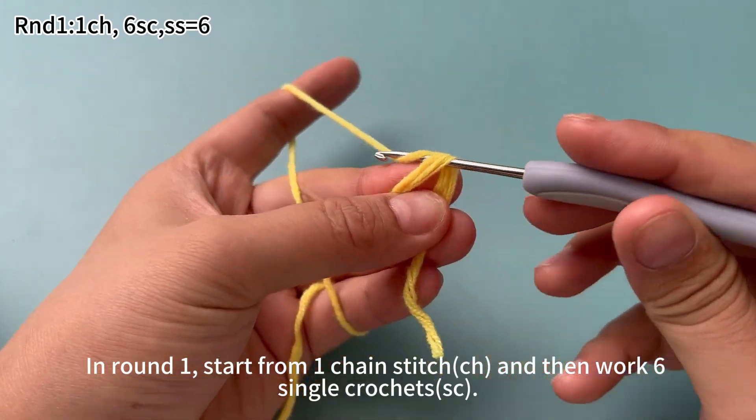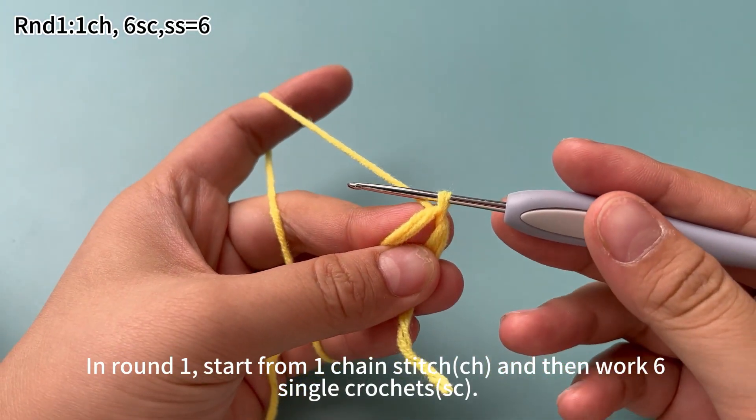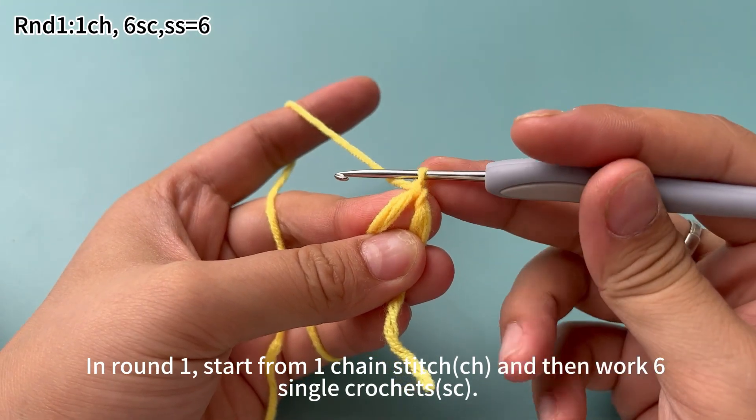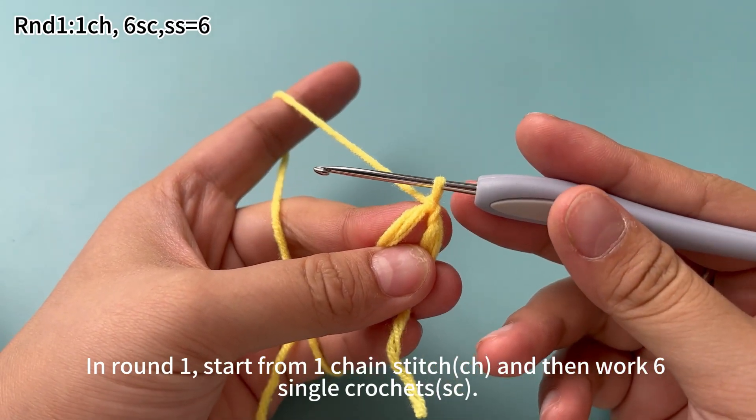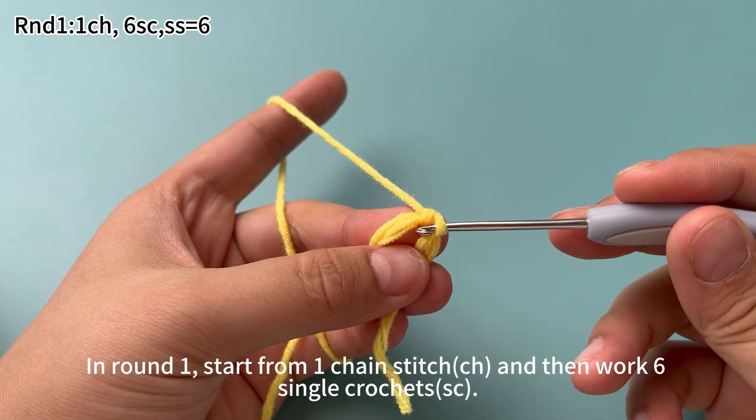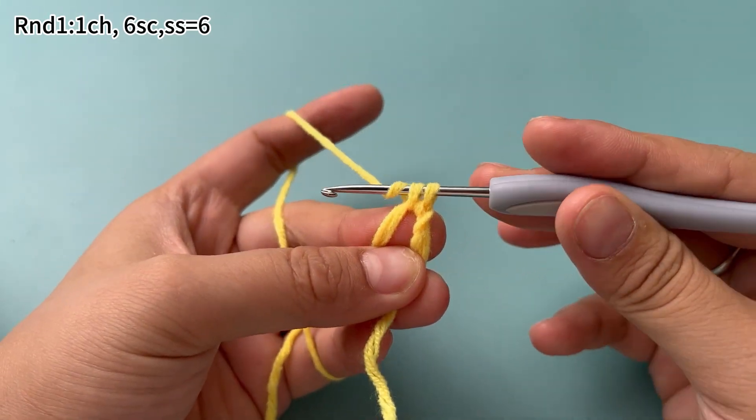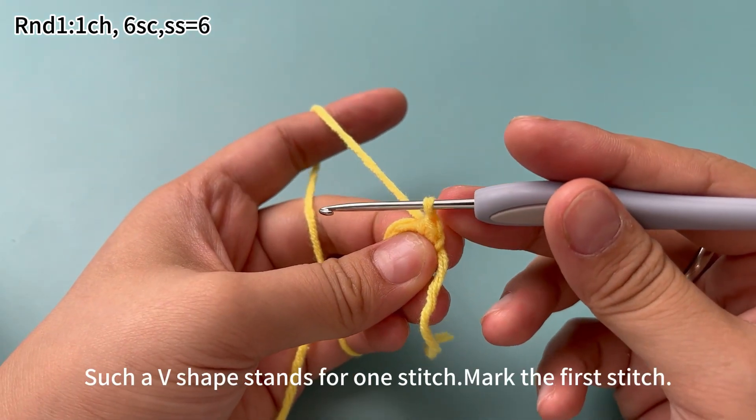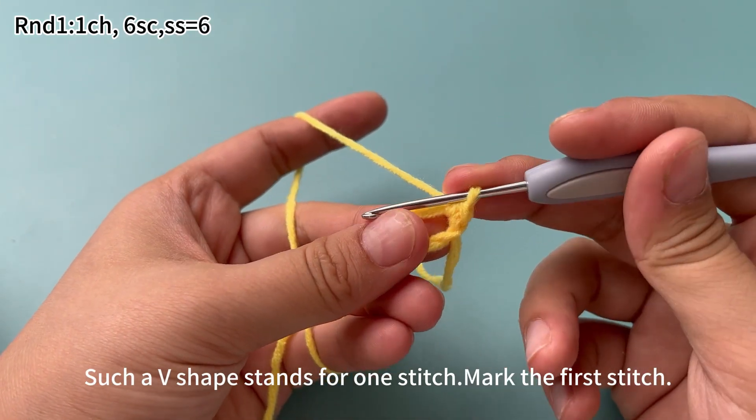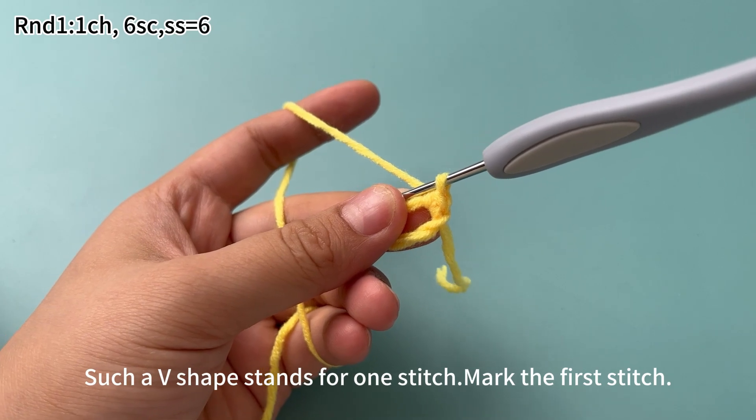In round one, start from one chain stitch and then work 6 single crochets. One single crochet is done. Such a v-shape stands for one stitch. Mark the first stitch.